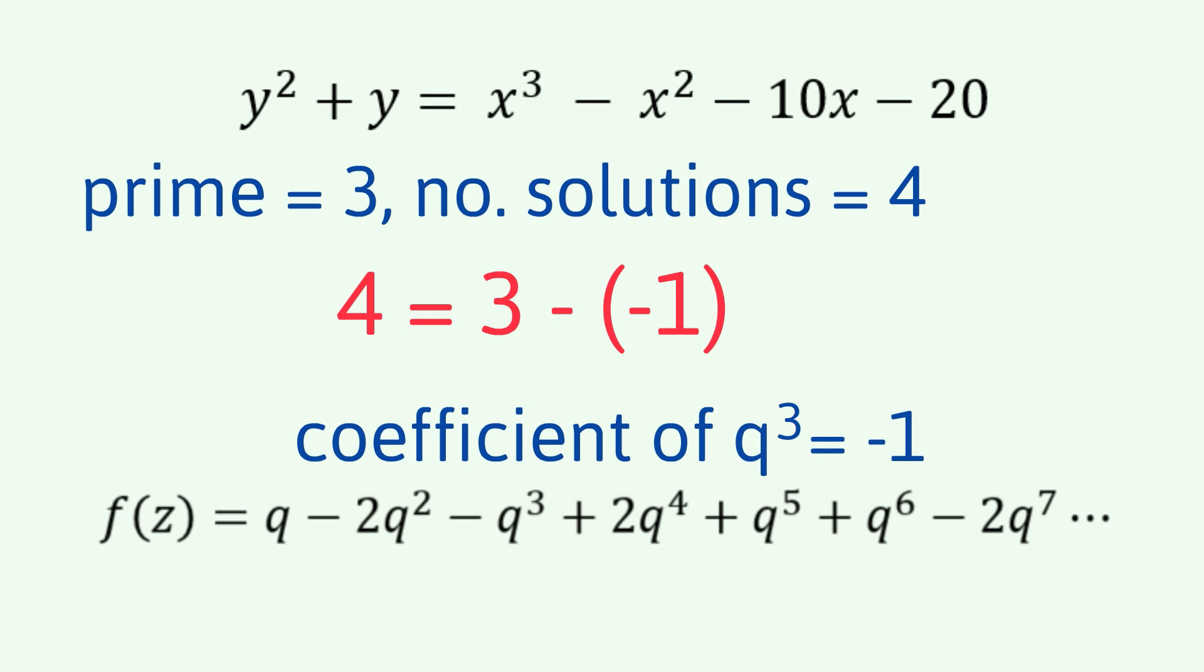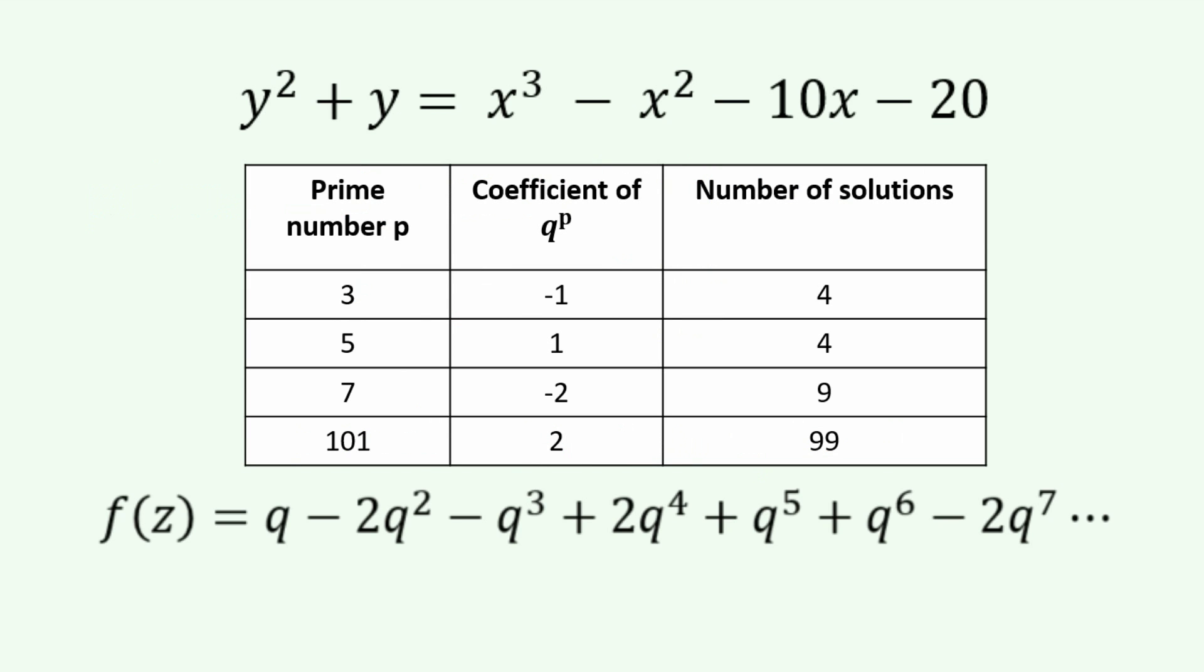So now, let's have a look at some others. I'll put up here 5 and 7 and I'll also, just for fun, put up 101. And you can see that in all cases, if we take the prime number minus the coefficient in the modular form, that we end up with the number of solutions for the elliptic curve modulo that prime. And this works for all primes except 11 because this is a level 11 modular form. It won't work, necessarily work for that but it'll work for all the others.